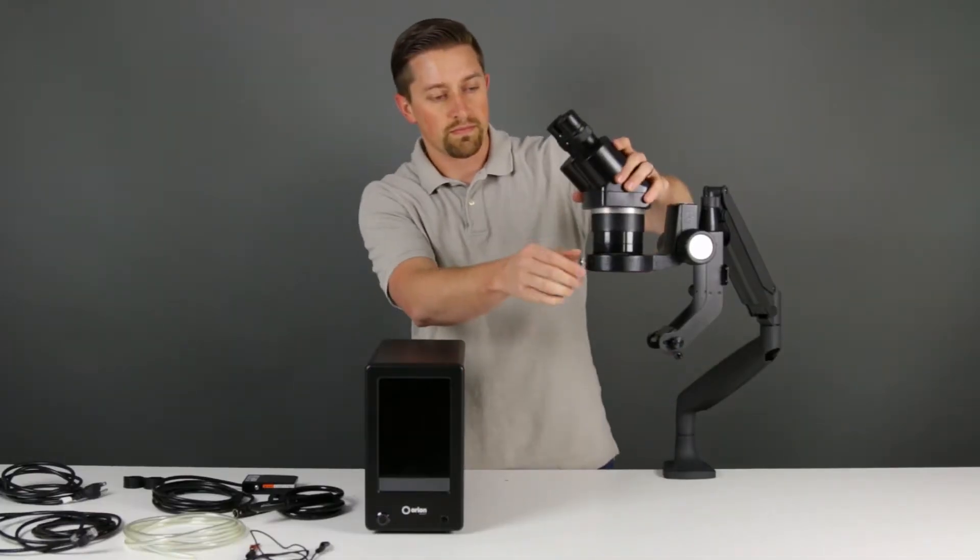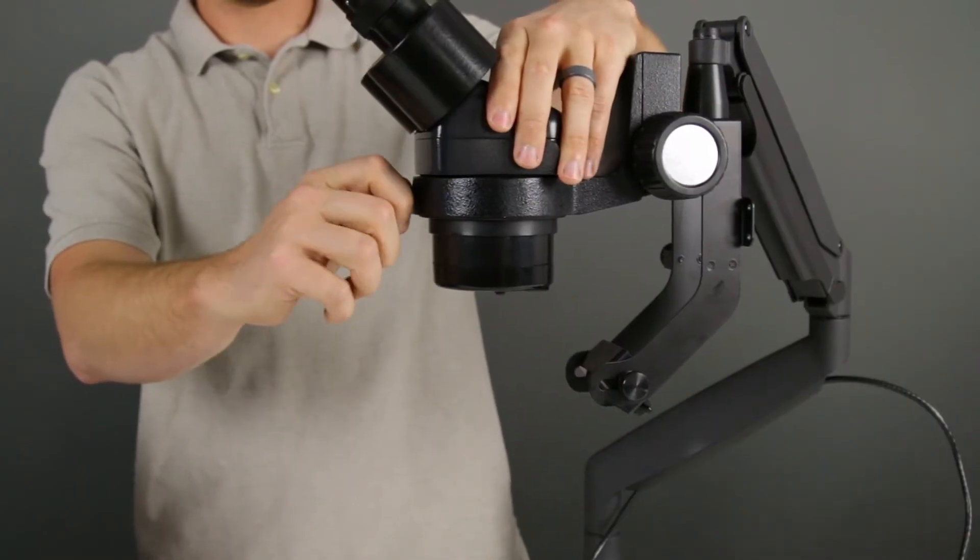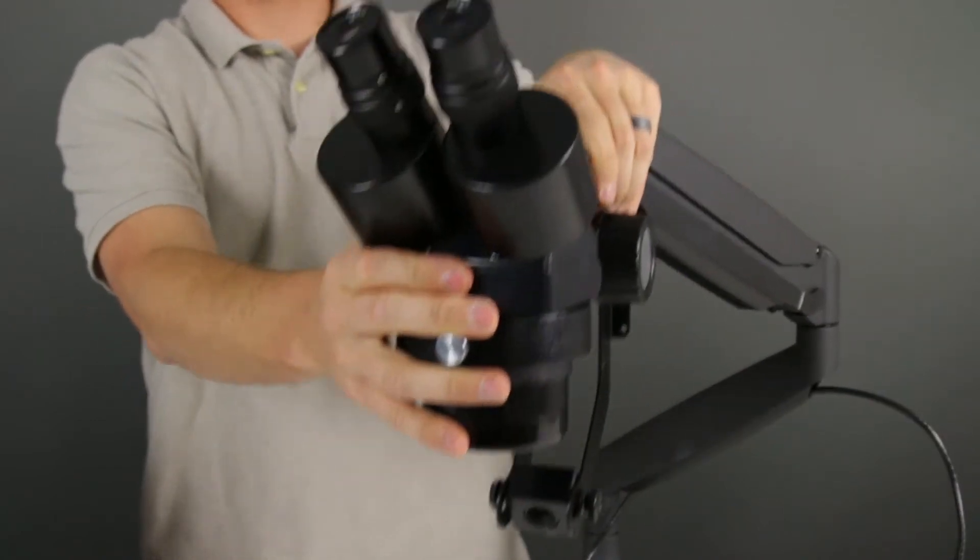Place the microscope head into the ring on top of the arm. Tighten the thumb screw on the front to secure the microscope to the arm.